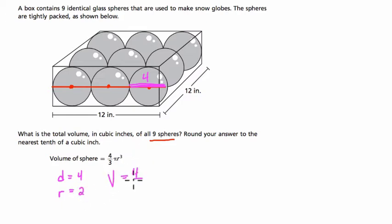Volume equals 4 thirds times pi times 2 cubed, right? And that's for 1, but I want 9 volumes, 9 spheres, so I take this number and multiply it by 9.